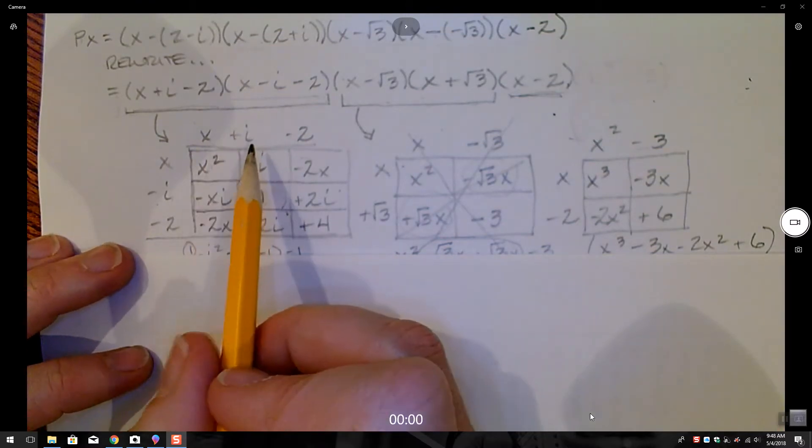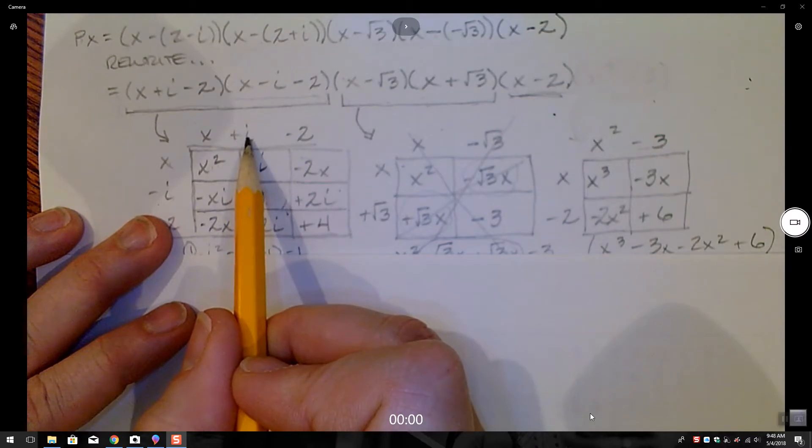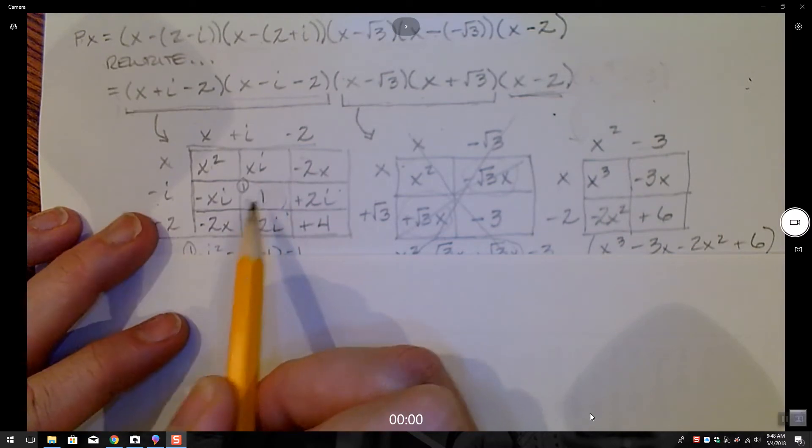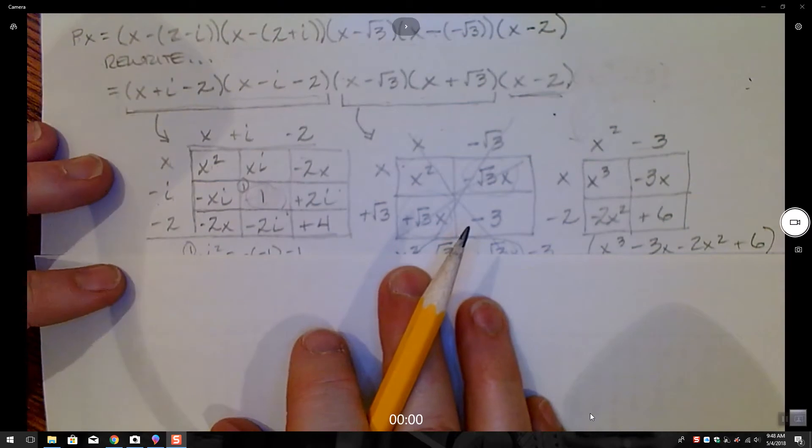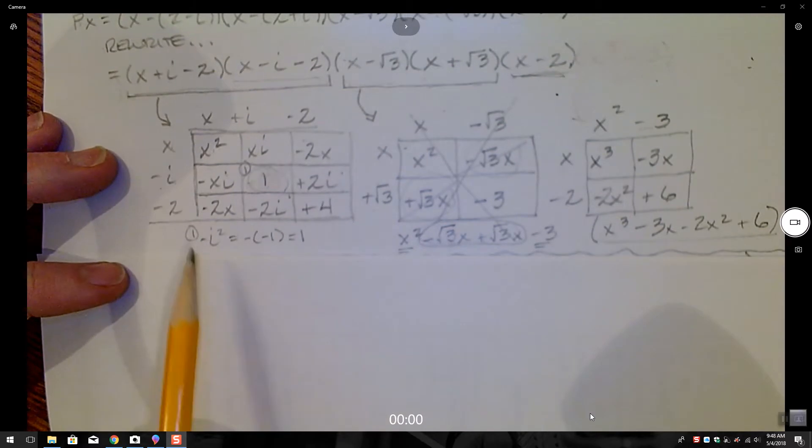One critical factor was to turn my minus i times the positive i, which would be a negative i squared, into 1, because i squared is negative 1, but I have a negative i squared, so this turns into a 1. That actually was causing me problems, because I didn't bother turning it into a 1 at first. So that was an important step.